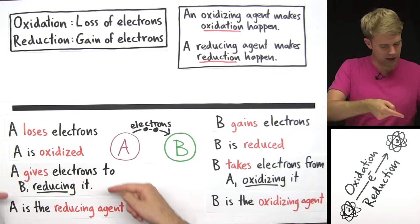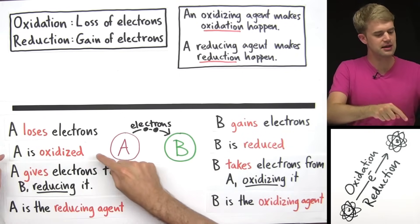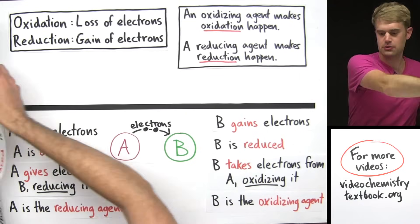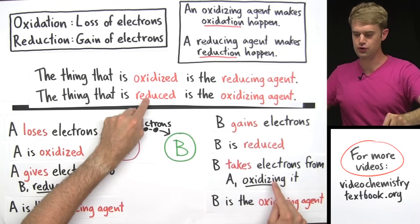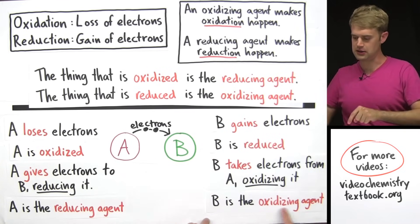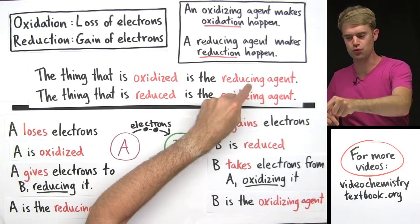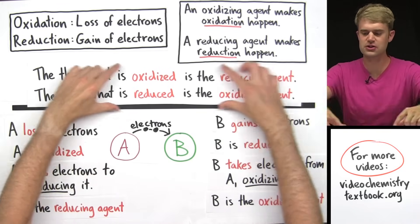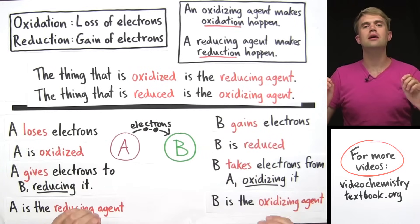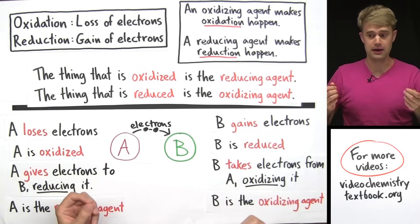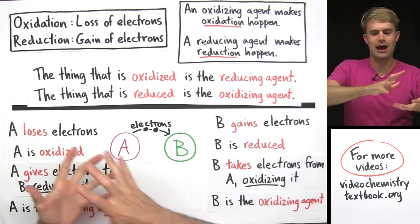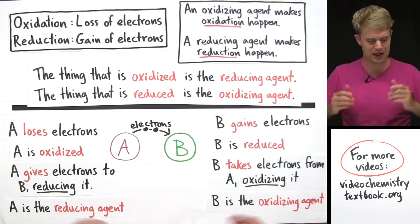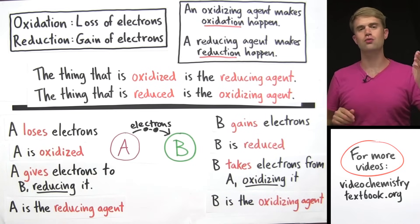If you look at what's going on here, there's kind of a switch that takes place. The thing that is oxidized — the thing that loses electrons — is the reducing agent. And the thing that is reduced — that gains electrons — is the oxidizing agent. This is one way to remember the flip-flop, but I think a better way to keep it in mind is remembering that the oxidizing agent makes oxidation happen by taking electrons away, and a reducing agent makes reduction happen by giving electrons. So this is an overall view of what oxidizing agents and reducing agents are.